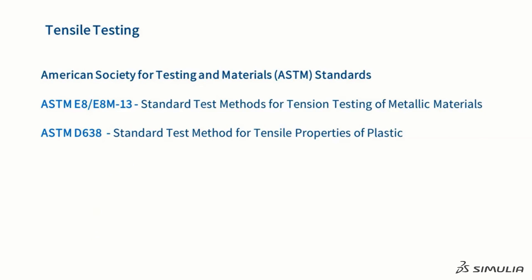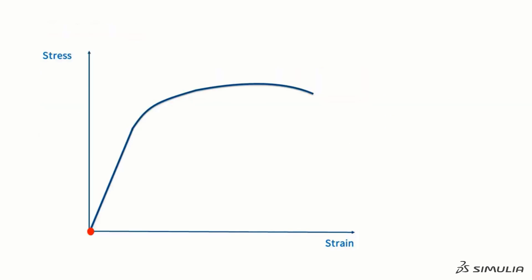The ASTM organization has defined standards for measuring the mechanical properties of engineering materials. We have listed two of the standards here. We will use a simulation of the test defined in standard E8 to help you make a physical connection to the published strength numbers. The test coupon starts out gray. As it experiences plastic deformation, it becomes blue. The color changes as the amount of plastic deformation increases, with complete failure occurring when it becomes red.